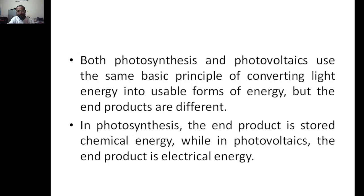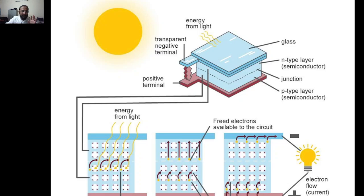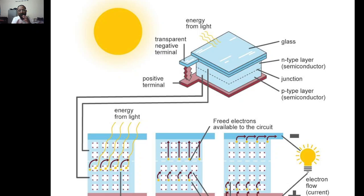In a solar panel, there is an n-type and p-type layer junction. When light hits the solar cell, photons are absorbed and electrons gain energy, moving from the valence band to the conduction band. This electron movement produces electrical energy, which can be utilized and stored.